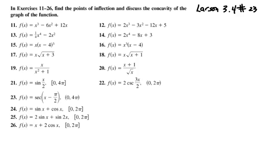Another question that was asked came from section 3-4 in the online Larson textbook, and it was related to question number 23 in the section exercises. 23 says f of x is equal to secant of x minus pi over 2 on the open interval from 0 to 4 pi.